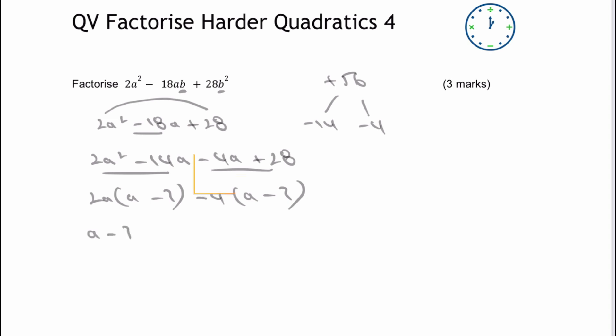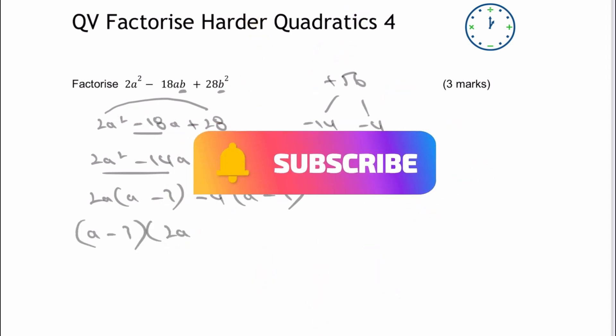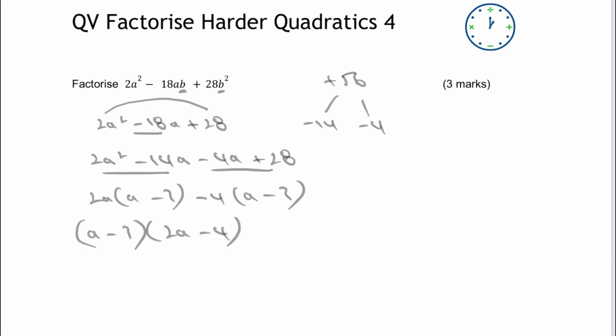So I'm going to write that separately, and that gets multiplied by 2a minus 4, and that's the factorisation of 2a squared minus 18a plus 28.